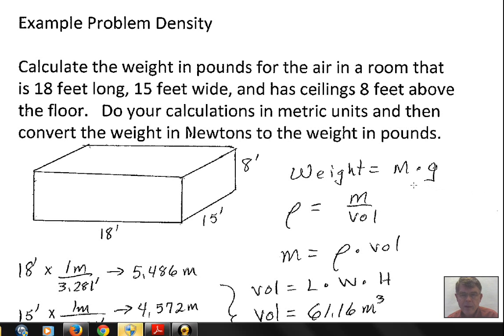The weight of the air in the room will be the mass of the air in the room multiplied by the acceleration due to gravity. We have a value 9.8 meters per second squared for the acceleration due to gravity. Our task is to find a value for the mass. How many kilograms of air are in this room?